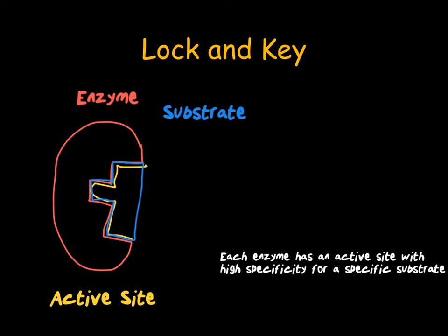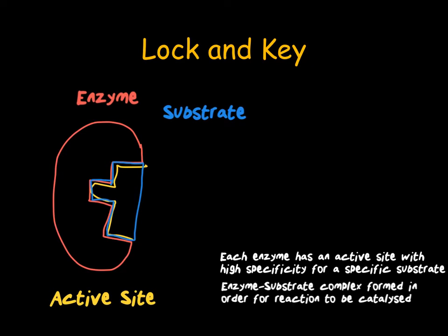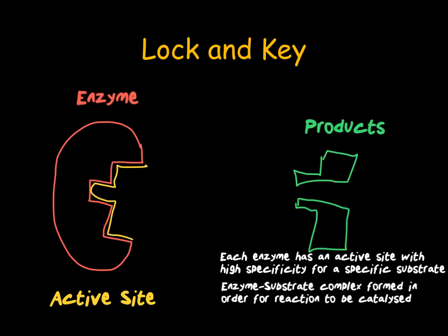Once the enzyme-substrate complex has been formed, the reaction can now take place. In this case, the substrate is going to be split into two products. The enzyme can then be reused over and over. How the enzyme and the substrate go together is known as a lock and key — the enzyme is the lock and the substrate is the key.